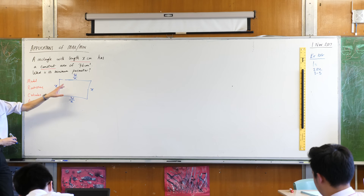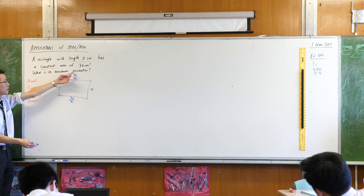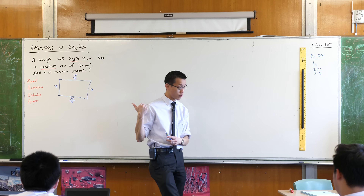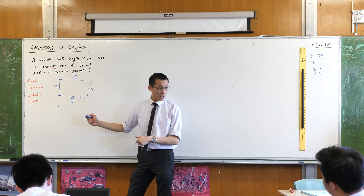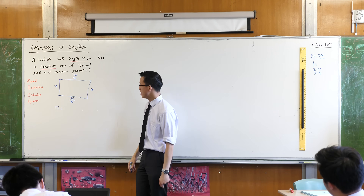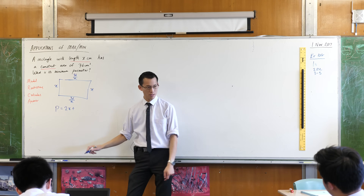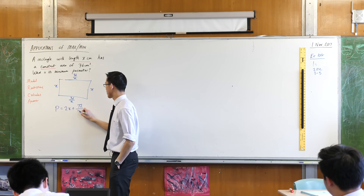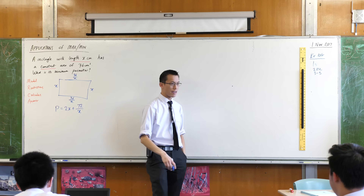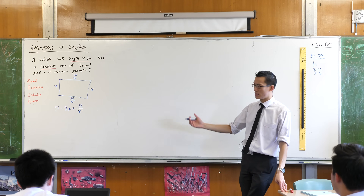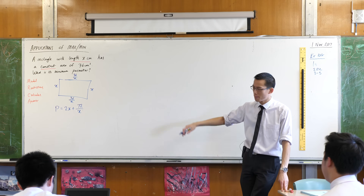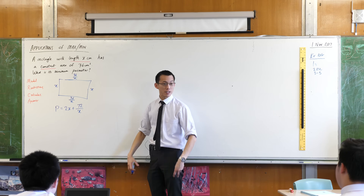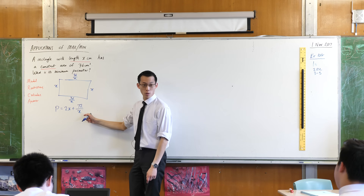The area is what I used to find the dimensions, but what I'm actually trying to get to is the perimeter — I'm trying to minimize perimeter, which means I need perimeter as a function of my variables. So I'll write P for perimeter equals: adding all sides gives 2x, and adding 36/x to 36/x gives 72/x. So P = 2x + 72/x. That constitutes my model — it demonstrates what's going on and allows you to work with it.